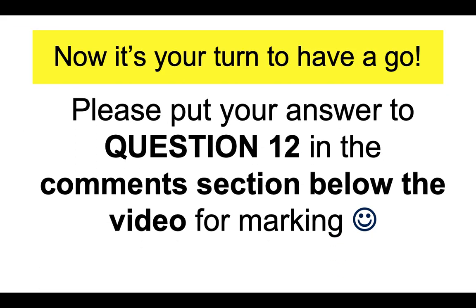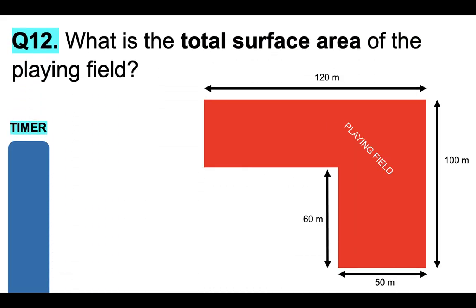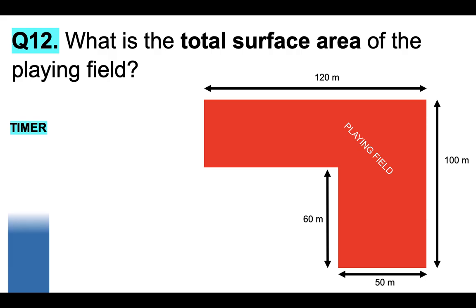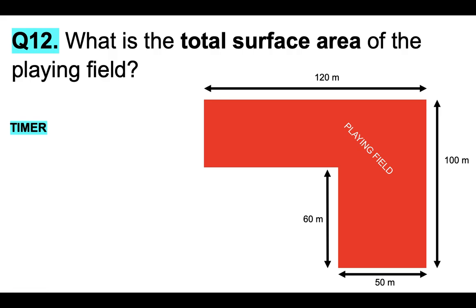Now it's your turn. Please put your answer to question 12 in the comments section below for marking. You might need to pause the video because the timer may not be enough time. Your question is: what is the total surface area of that playing field? If you managed to get that done within the time, you've done brilliantly.